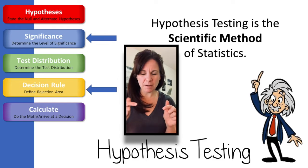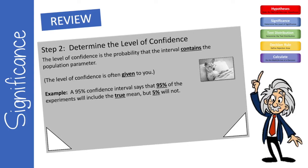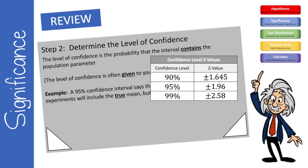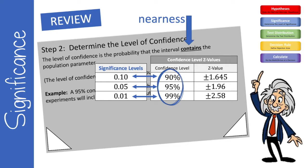We're kind of skipping the test distributions for now, but we'll come back to it. As a quick review, in the last unit we learned about confidence intervals, and part of the formula for those was working with critical Z values. The Z value we used depended on the confidence level. In hypothesis testing we work with significance levels — either 0.1, 0.05, or 0.01 — which pair up as complements to the confidence levels. In confidence intervals we focused on closeness to a population value; in hypothesis testing we're looking for extremes.